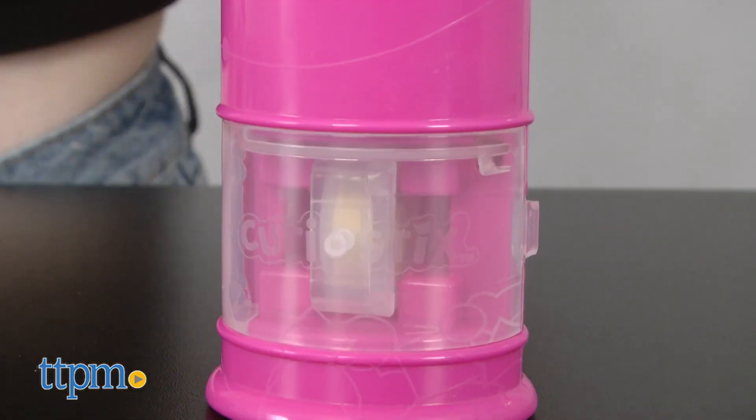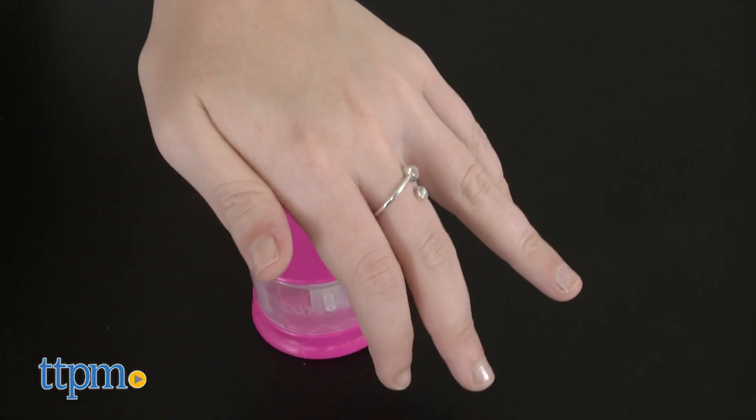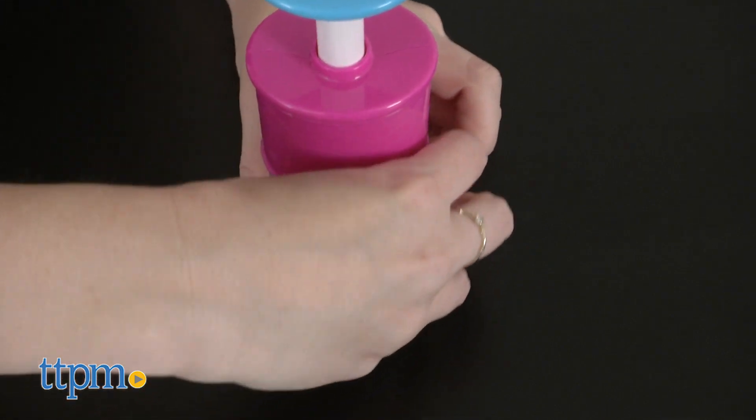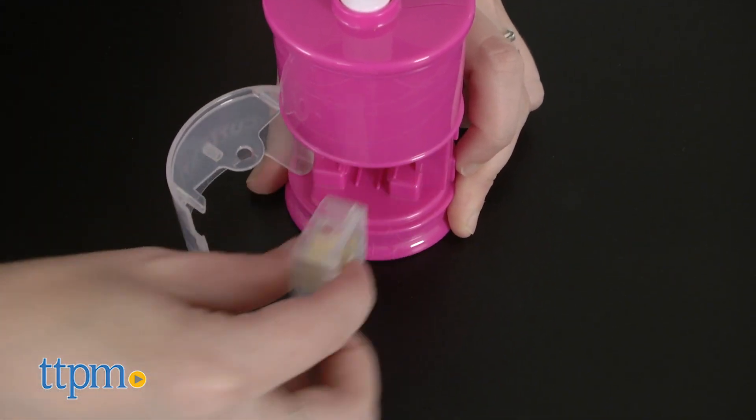You'll need to insert the container into the coring device either vertically or horizontally, depending on how you want your beads cored.